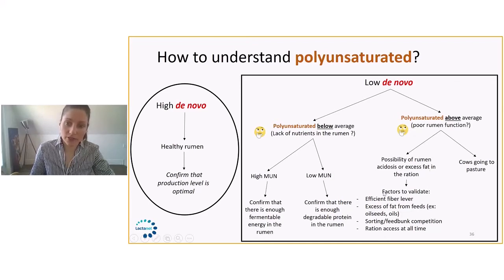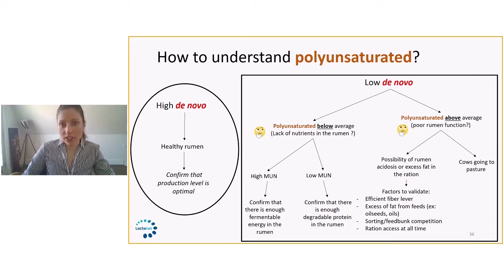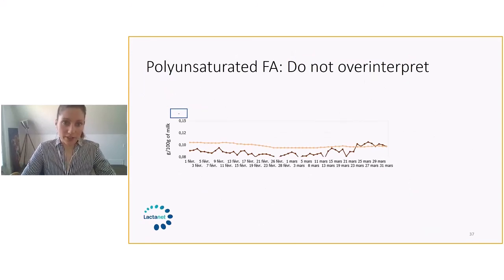Here's a little list of things that you can validate. You can look at the fiber level, making sure that there's enough effective fiber in that ration. Avoid having excess fat from feed, like oil seeds or oils coming from the ration. There can also be management factors that affect the cows like this: sorting, feed bunk competition, and make sure that cows have access to ration at all times. This chart here you can find it on our website. It's a really similar chart that you can download if you want to use this information.